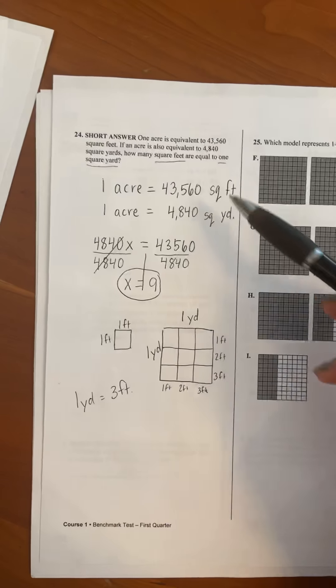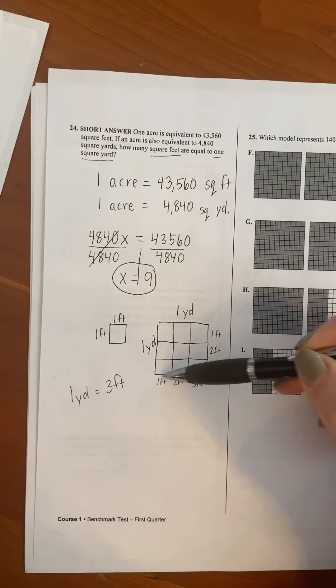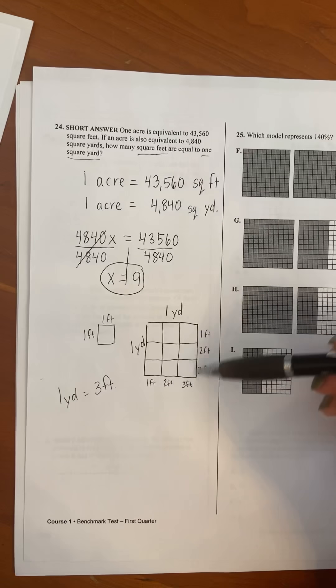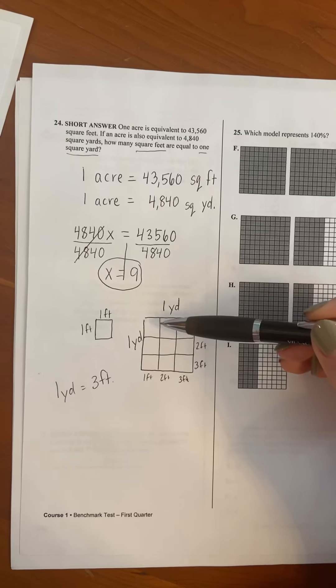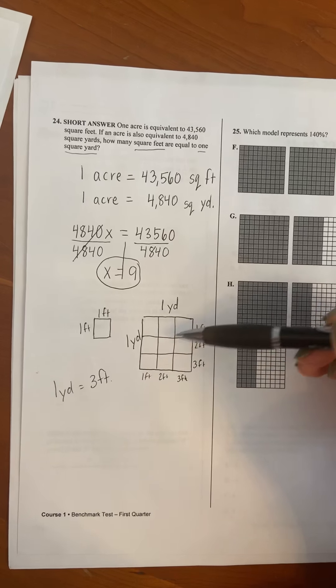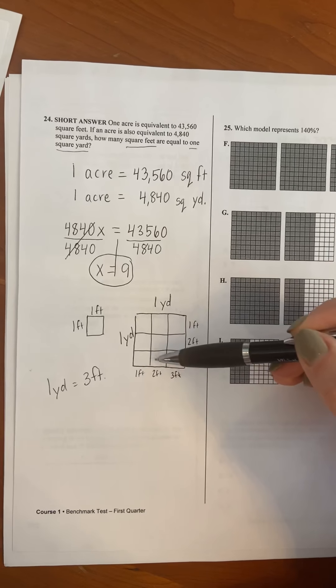So when they're asking you how many square feet are in one square yard, this is all you have to know. You can just now count them up. So the big box are the yards. How many feet are in here? One, two, three, four, five, six, seven, eight, nine.